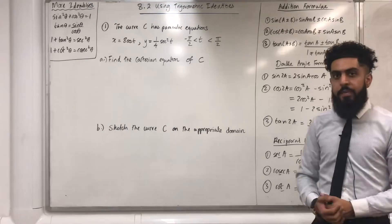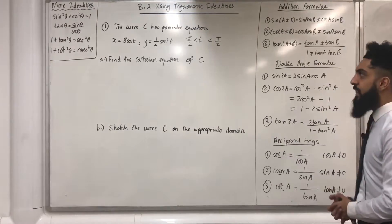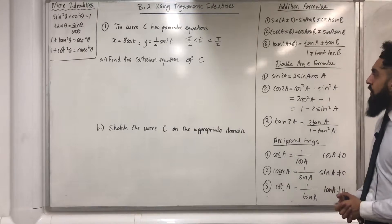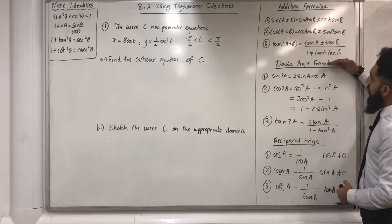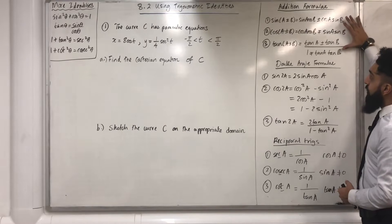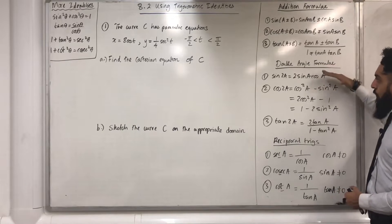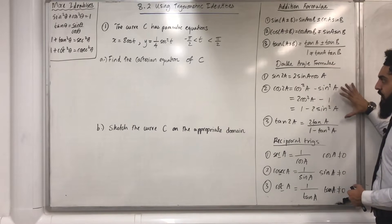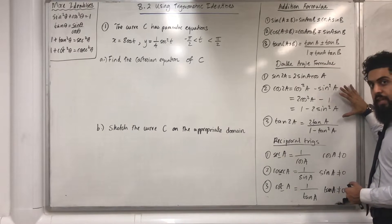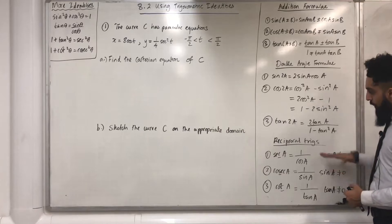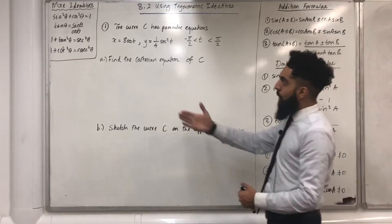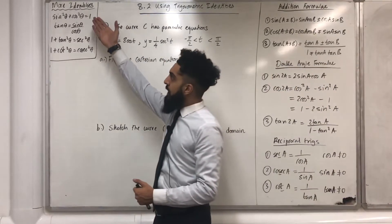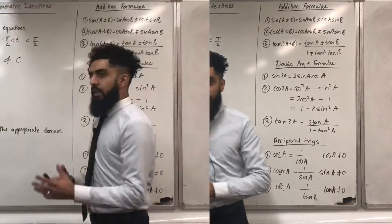I've got some beautiful identities up on the board. Addition formulae — each of these are true for any A and B. Double angle formulae — each of these are true for any A. Reciprocal trigs and more beautiful identities over here.